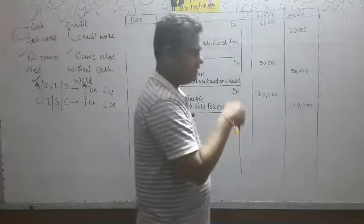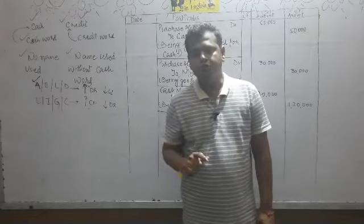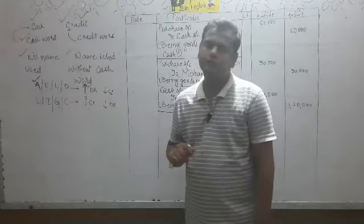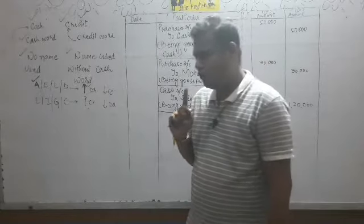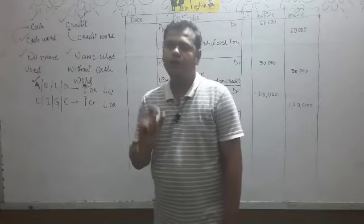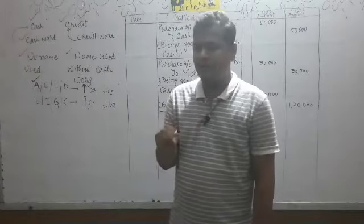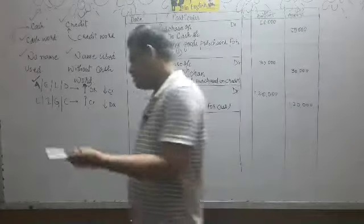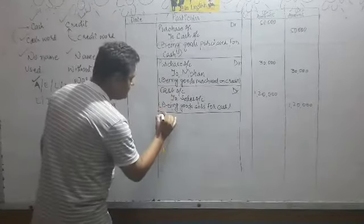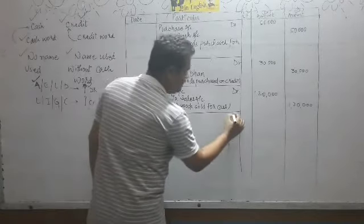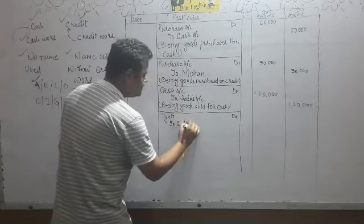Now we also seen here a credit transaction regarding sales. Note down the transaction. Goods sold to Jyoti worth rupees 30,000. Now, this transaction is credit. It has a name and there is no cash word, so it's credit. Now how do we solve it? Simply, cash is received. This is not. Credit transaction is so name use will be in cash place. So now Jyoti debit to sales account.